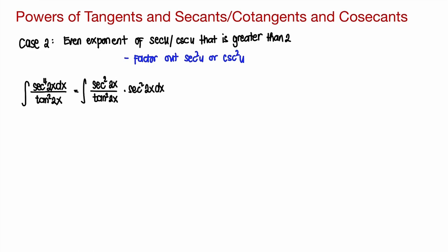Remember that this factored out part should be part of our du. So if this is our du, then everything else in the integrand must be expressed in terms of tangent. Because this is already 2, we can now express this in terms of tangent. That's equivalent to tangent squared of 2x plus 1 over tangent squared of 2x and then secant squared of 2x dx.